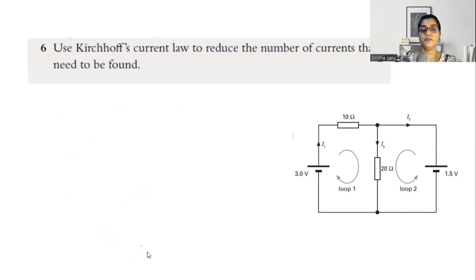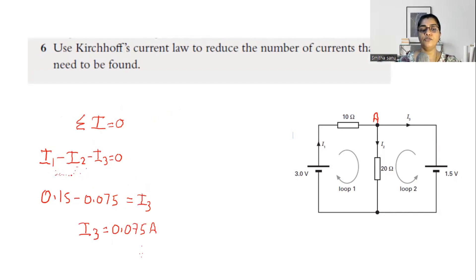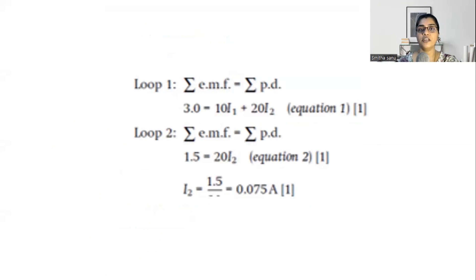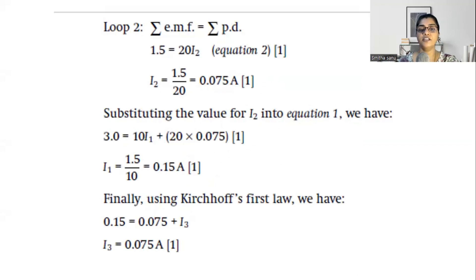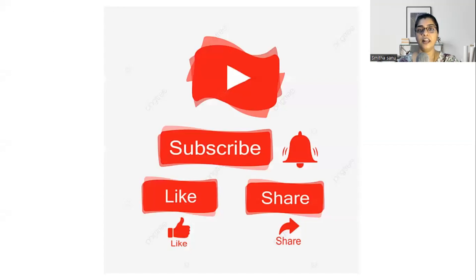Now go back to the junction equation. The junction equation tells you that the sum of current in equals current out. I1 and I2 are already known; substituting gives the value of I3, which is the same as I2 — 0.075 amperes. So I1 is 0.15 amperes, I2 is 0.075 amperes, and I3 is also 0.075 amperes. Hope you have understood how to apply Kirchhoff's laws and solve a basic circuit. Like and subscribe to my channel and press the bell icon for regular updates.